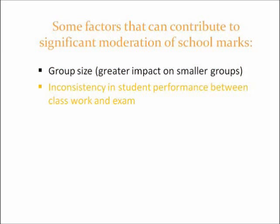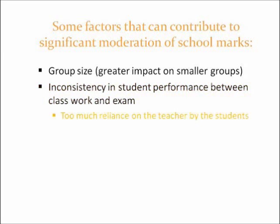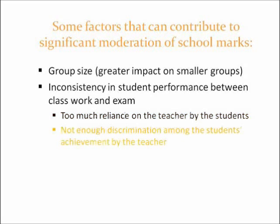Inconsistency in student performance between classwork and the exam can cause significant effects both in the class averages and the standard deviations. On the whole, if students rely too much on their teacher for encouragement or scaffolding, they may give up more easily on the exam. If all students do this, the class average will be lower on the exam than for school marks. If only some students do this, the standard deviation will be higher on the exam than for school marks. The message here is to be a little less helpful at times and to encourage student independence. Also, if teachers keep the standard deviation artificially low by not discriminating real differences in achievement, the standard deviation of exam marks will tend to be greater — so continually monitor student progress and be realistic.